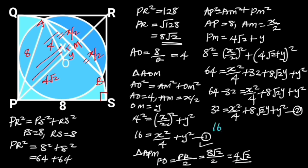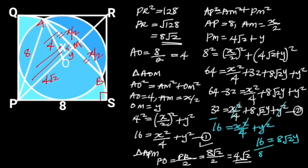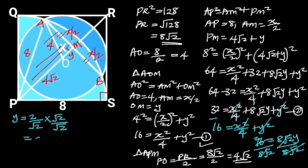Next, let's subtract equation 1 from equation 2. 32 minus 16 is equal to 16. X squared over 4 will cancel out. Y squared will equally cancel out. And we are left with 16 is equal to 8 root 2 · Y. Next, we divide through by 8 root 2, leaving us with Y is equal to 2 over root 2. To rationalize the denominator, we multiply the numerator and the denominator by root 2, giving us Y is equal to 2 root 2 over 2. 2 will cancel out 2, and we are left with Y is equal to root 2.